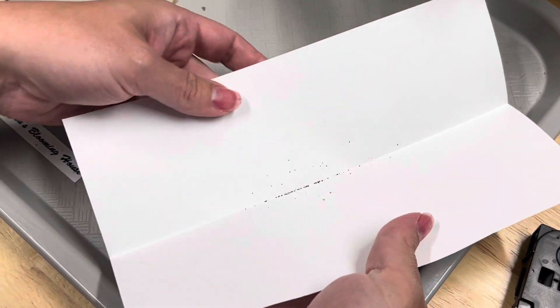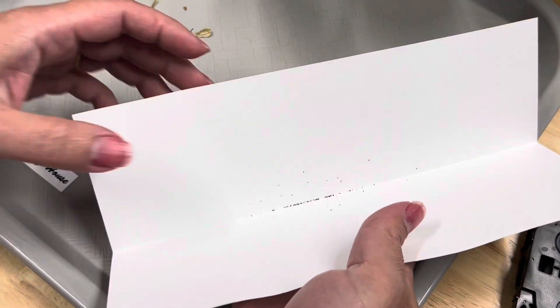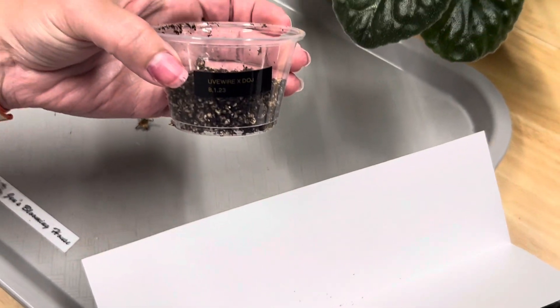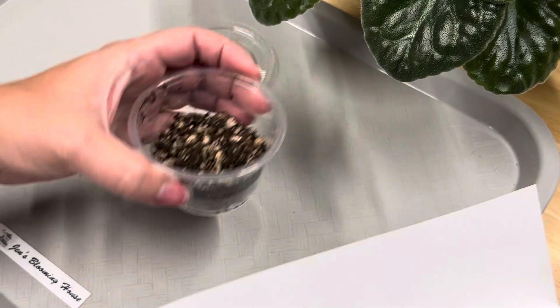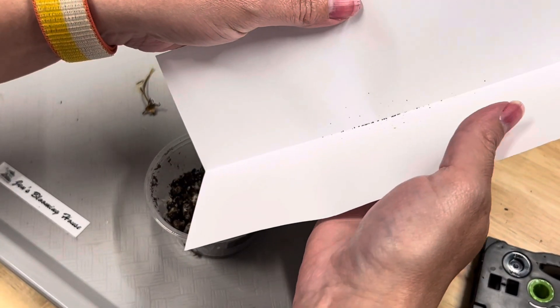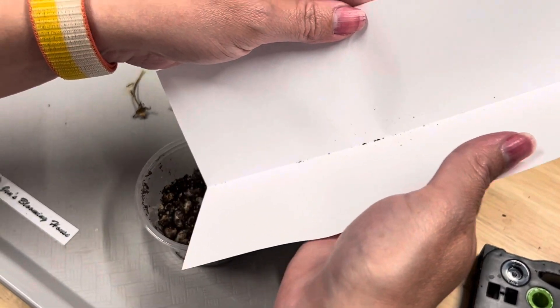So I kind of folded that paper in half so there's like a little valley there. I have this already labeled with the cross and the date, and just kind of tap them in there.